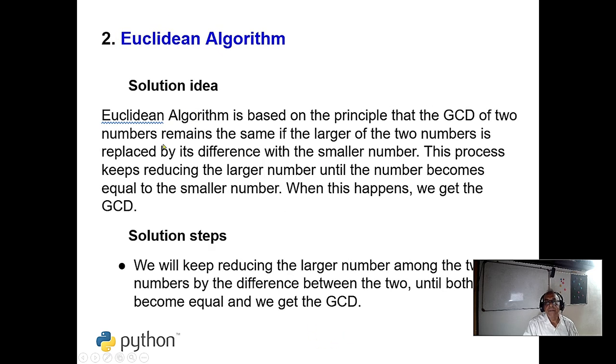Euclidean algorithm, I have discussed. It is repeated minus but better is modified Euclidean algorithm is divide the bigger number by the smaller number and take the remainder, until and unless remainder not equal to 0, you go this process.